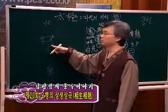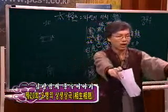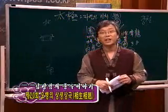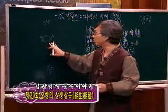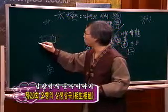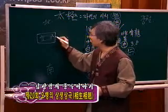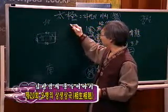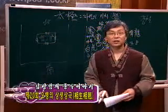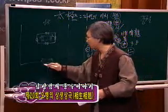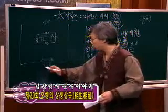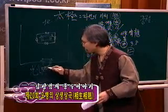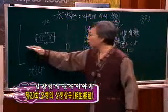경복궁이 북쪽에서 남쪽으로 향하고 있습니다. 근정전은 앞에 조정신료들이 쫙 있어서 정식적인 의례 행사를 하는 곳으로, 제일 큰 건물입니다. 계단들이 쭉 있고 석상들이 두 개씩 있으며, 경복궁을 둘러싸는 담에 광화문이 있습니다.